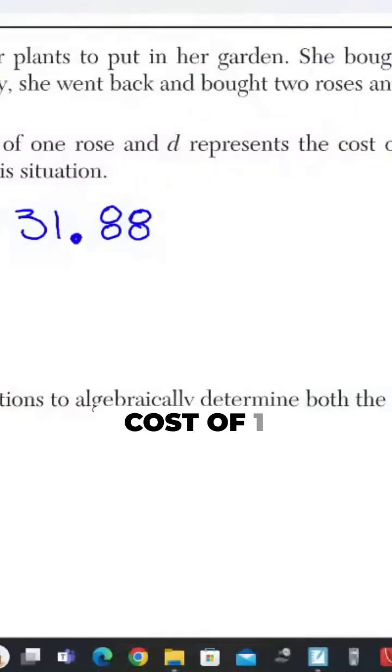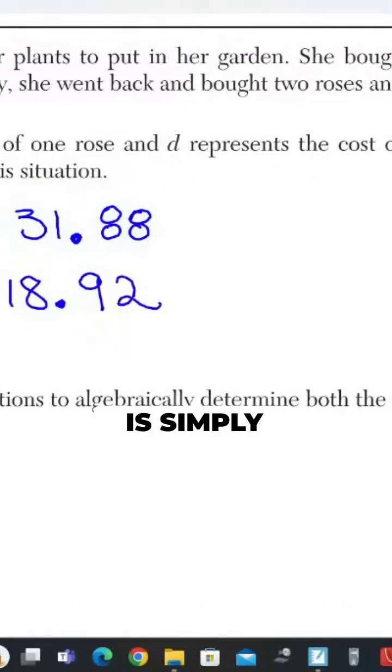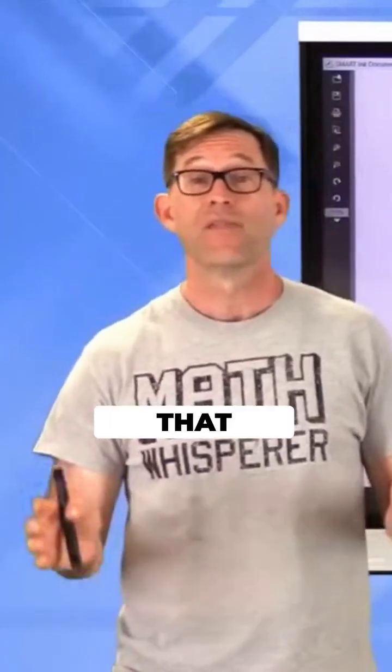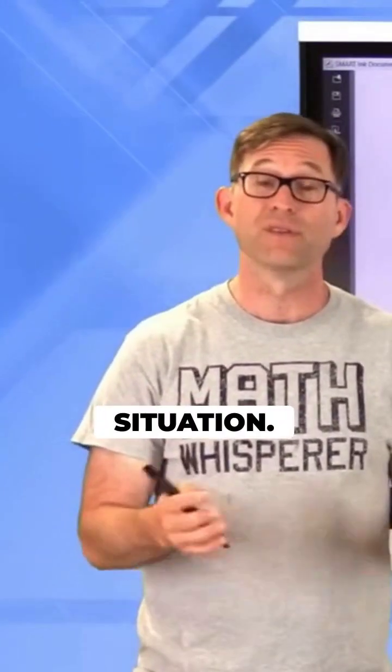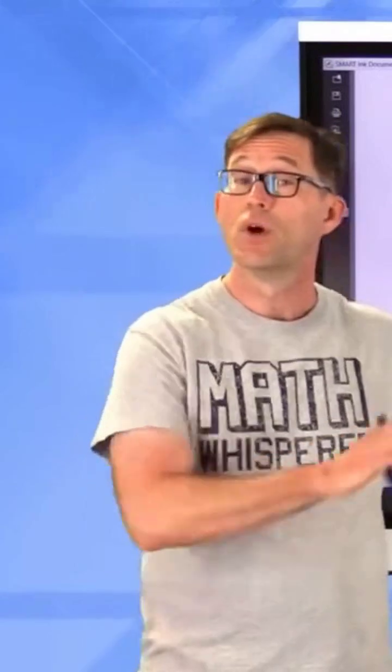If I take the cost of one rose and multiply it by two and add to it the cost of a single daisy, I'm now going to get $18.92. And that is simply the system of equations that represents or models this situation.